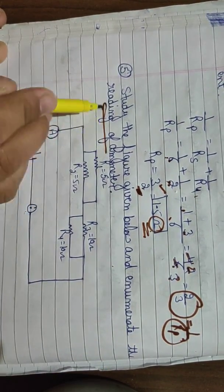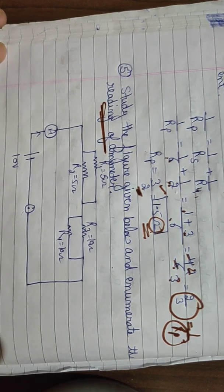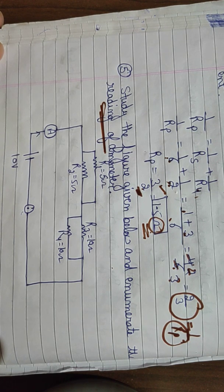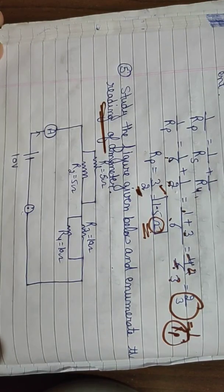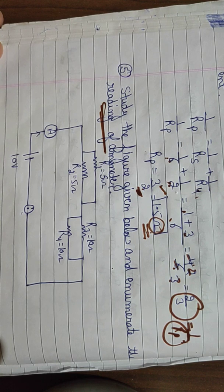Statement: Study the figure given below and find the reading of the ammeter. To solve this question, you need to know what the ammeter measures. The ammeter is a device used for measuring the amount of electric current in the circuit. It will measure how much electric current is flowing in the entire circuit. As an assignment, find out: when an ammeter is connected in a circuit, is its resistance high or low?